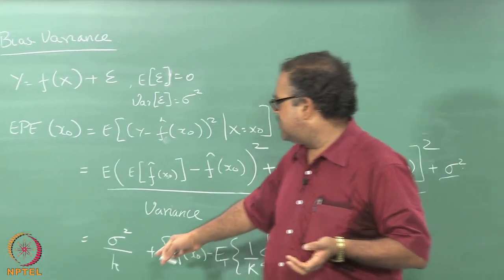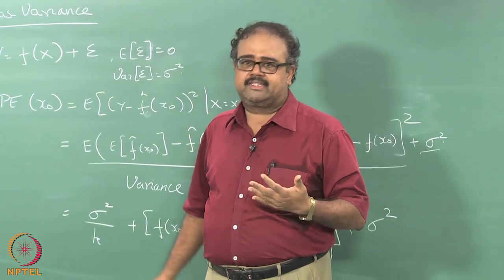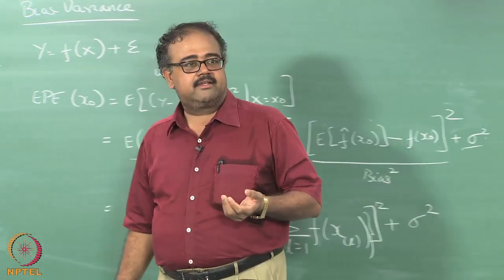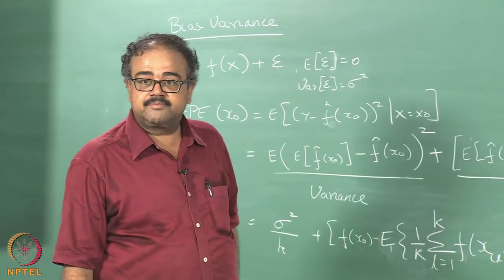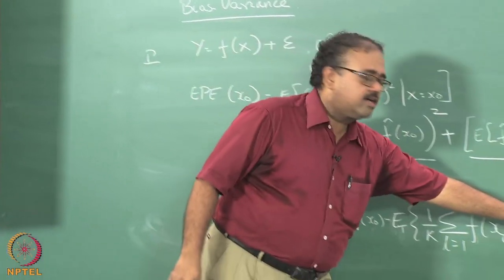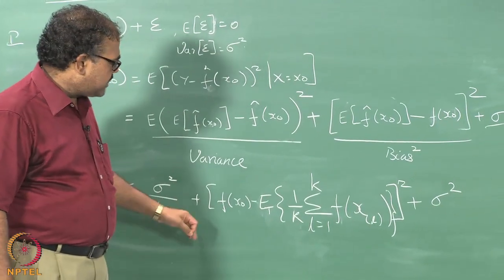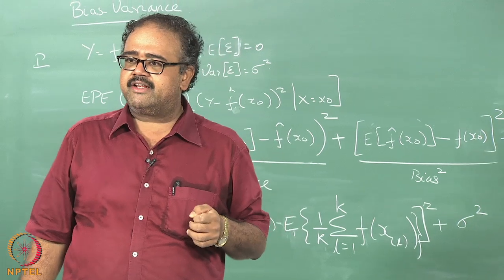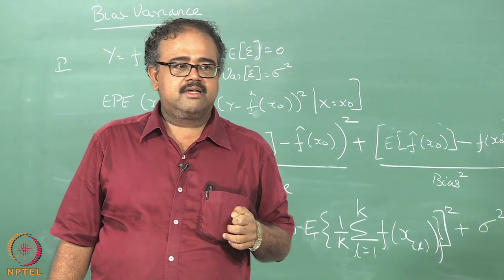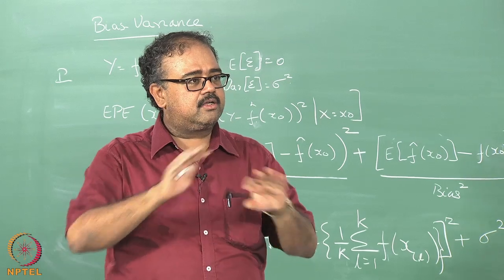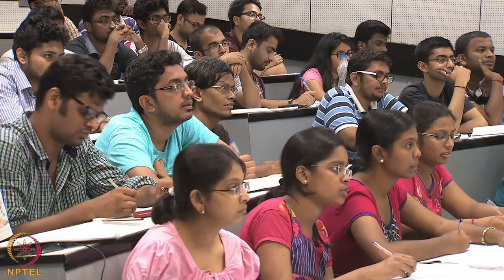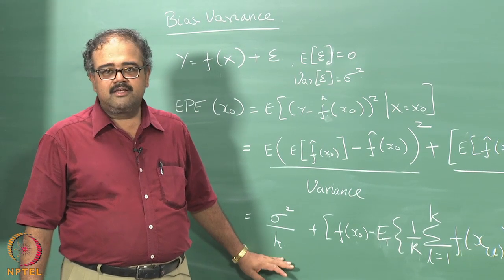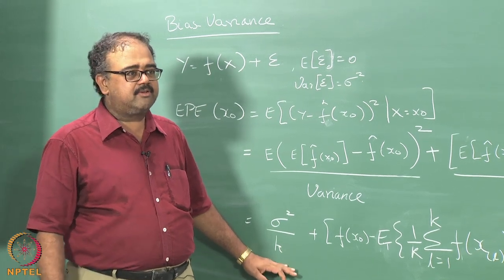Variance decreases just because I am taking an average of more data points. There is nothing to tell you that the average is correct — it is just that the average will look the same even if I change the training data, because I am averaging so many data points. And the sigma squared part we cannot do anything about — that is the irreducible noise. So what does this tell you? Last class, we had this discussion about increasing K — what does it do? I said it will look more stable. Why does it look more stable? Because my variance goes down.